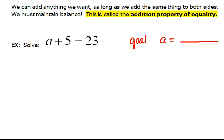Now, let's look at the equation the way it's written right now. We have a plus 5 equals 23. We don't want plus 5. We want a to be all by itself.